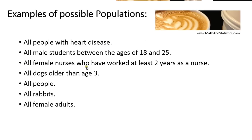A third example might be all female nurses who have worked at least two years as a nurse. In this case, a community might be interested in nurses' perceptions of the medical profession and the medical community, but they only want to interview female nurses who have worked at least two years. Because of these specifics in their research, their population of interest is all female nurses who have worked at least two years as a nurse. So you're already seeing that a population is very specific to the group of interest, depending on the research being conducted or the data being collected.